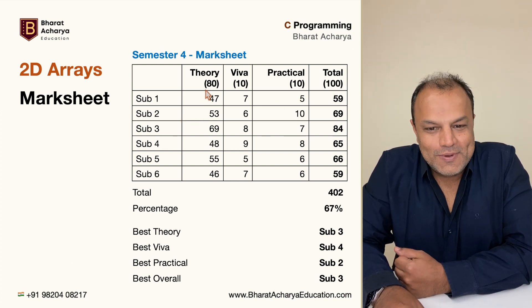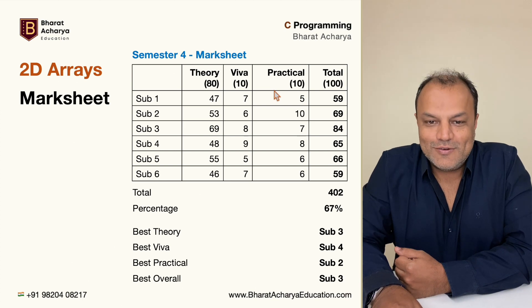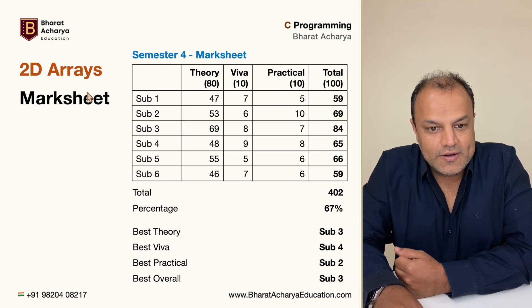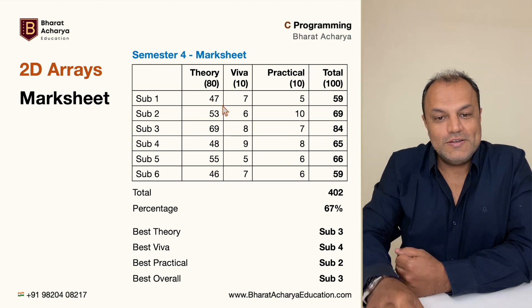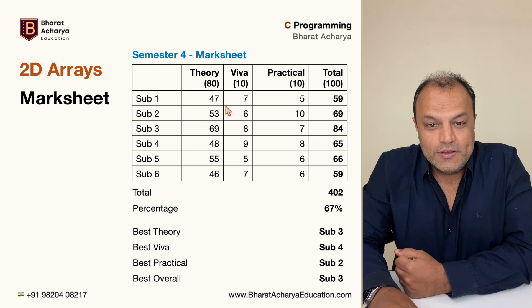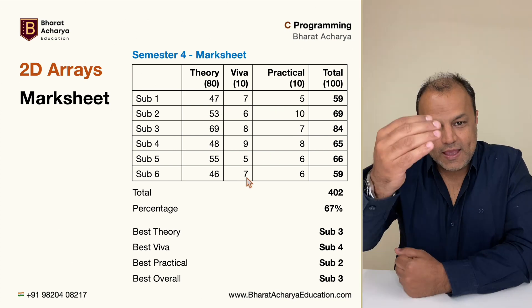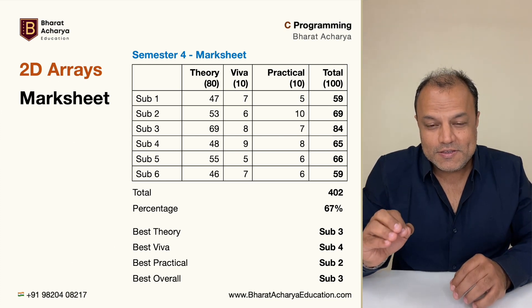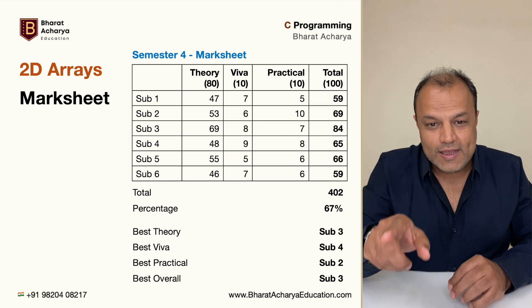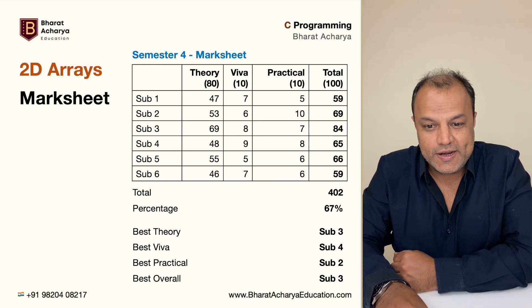So, the theory marks out of 80, the Viva marks out of 10, practical marks out of 10. Altogether, the total is 100. What the teacher will enter are just these values. For every subject, one by one, the teacher will enter the theory, Viva and practical marks. Once the teacher has entered that, the teacher hits a button and this whole mark sheet should be generated.